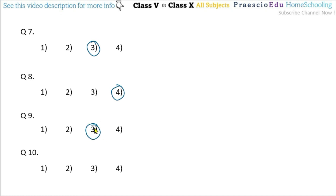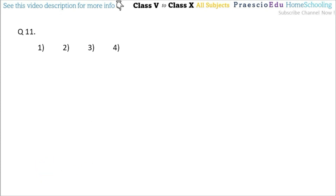Question number 10: the arrow points right, then downward, then left, then upward — this is a clockwise rotation. So to replace the question mark, the arrow should point right again. This matches the first figure, which is given in option number 1.